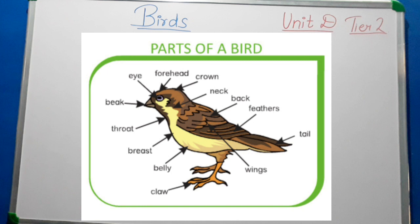This is a bird and let's see the parts of a bird. It has eye, forehead, crown, neck, back, feathers, tail, wings, claw, belly, breast, throat and beak. We will study one by one in detail about the bird.